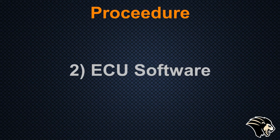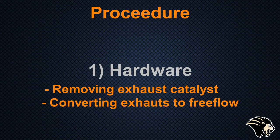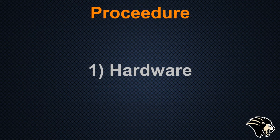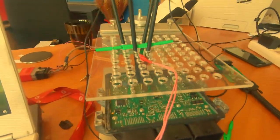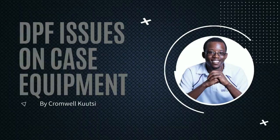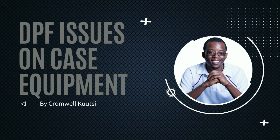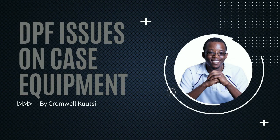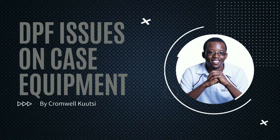The first stage is the hardware — we're converting the exhaust to be free-flowing. The exhaust has a DPF catalyst and another part dealing with AdBlue, which has an AdBlue injector that squirts emission fluid into the exhaust. All of that will be disconnected and removed. The second stage is reprogramming and remapping the computer to remove the DPF algorithm and the AdBlue system algorithm.